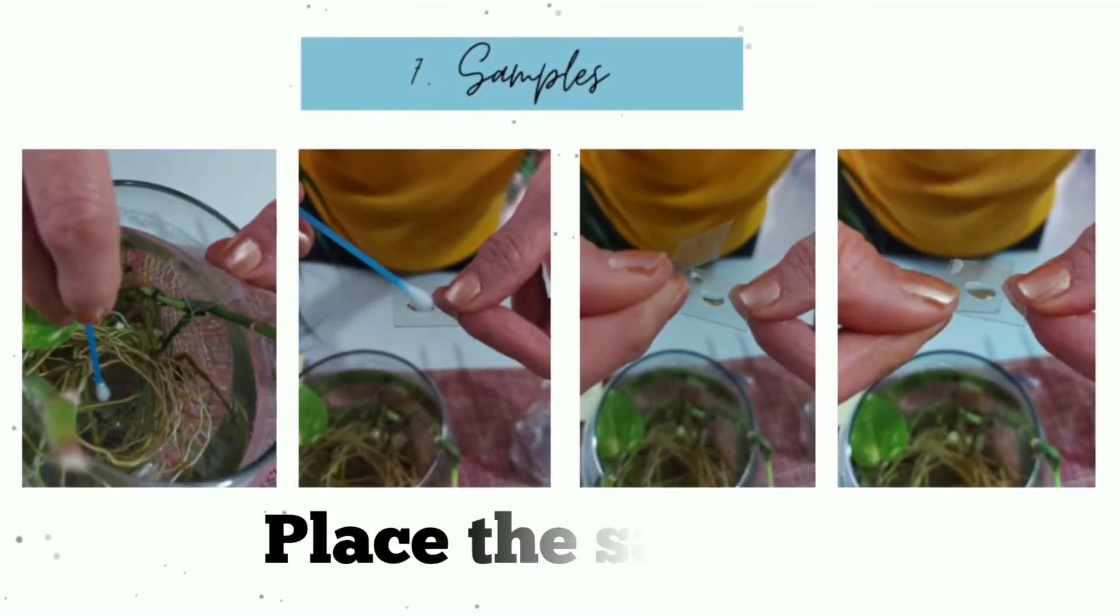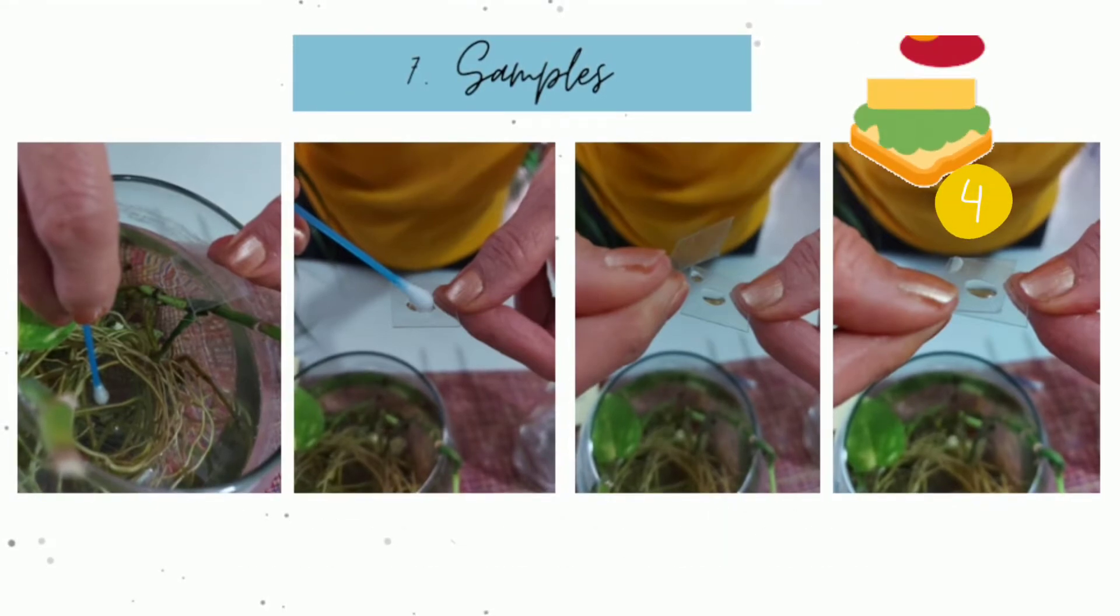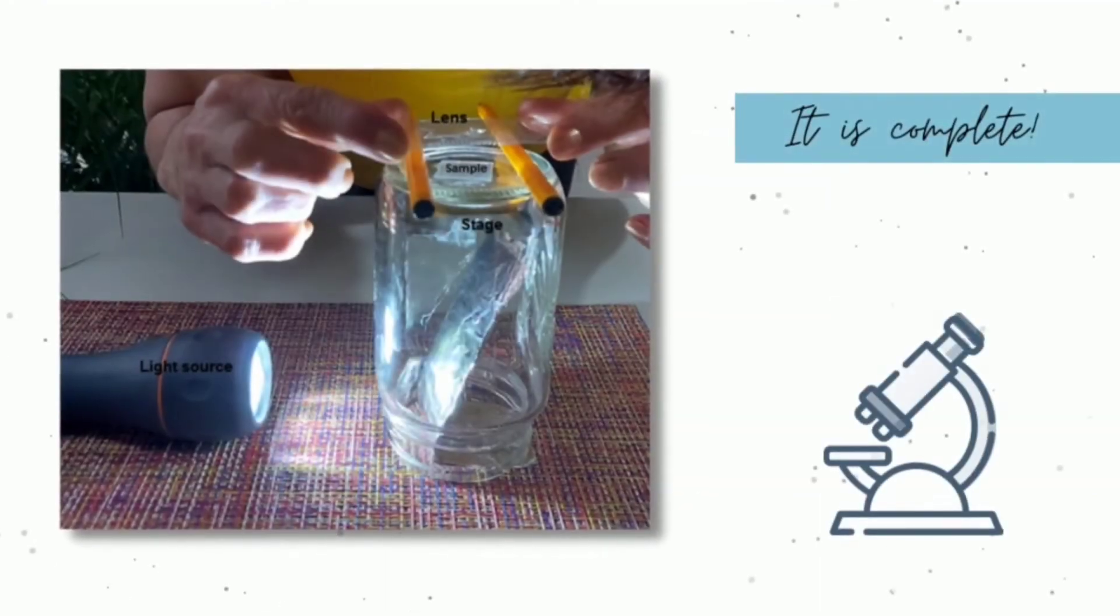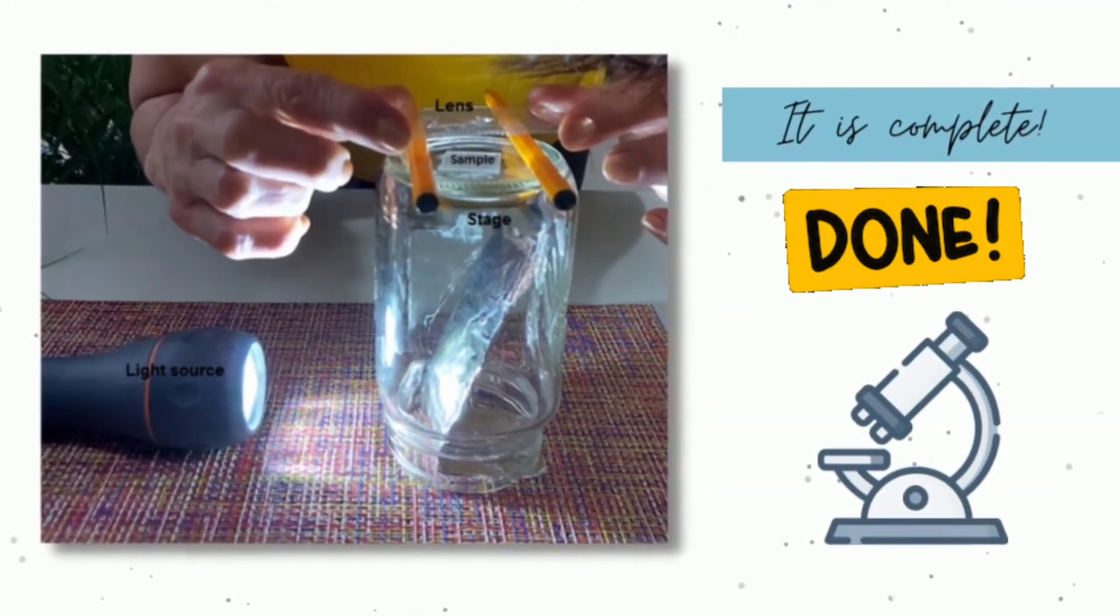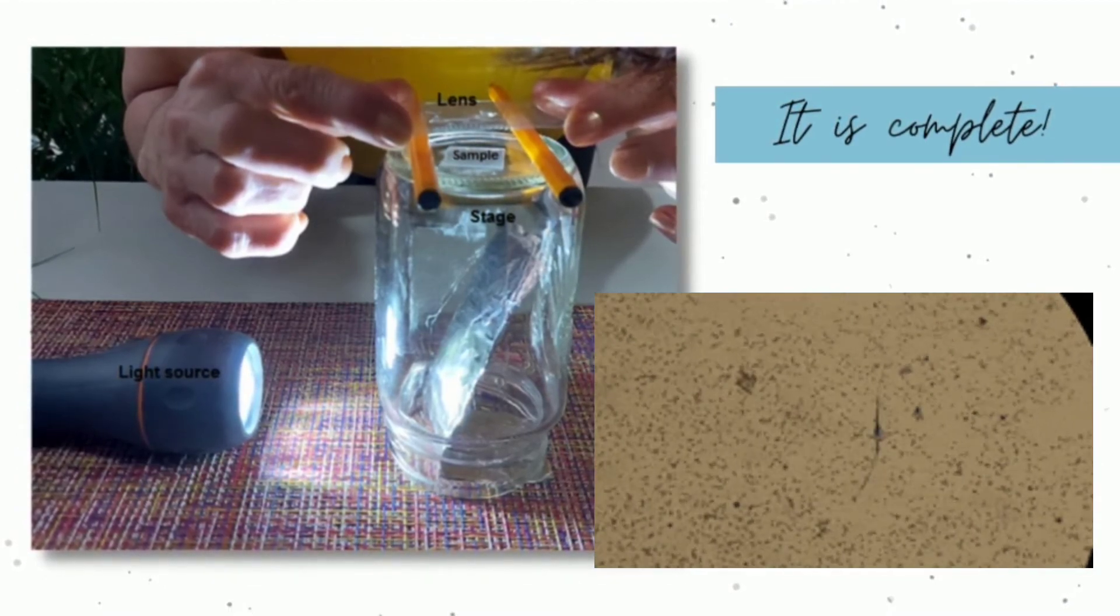In this part of the experiment, you need to place the sample in between the cover slip and slide, as if you were doing a little sandwich. Finally, it is complete. You have all the main parts that microscopes need to work correctly.